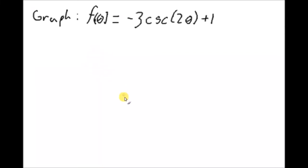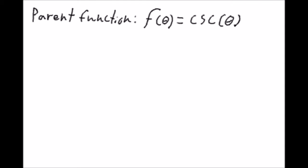All right, so today we are assigned this problem here: graph f of theta equals negative 3 cosecant 2 theta plus 1. Now graphing this is real complicated by itself, but if we simplify it to its parent function, it's a much simpler equation.